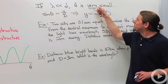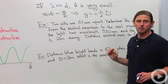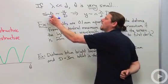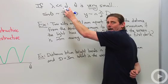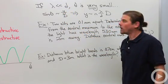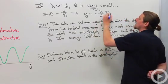then θ is going to be extremely small. And so then we can use this wonderful approximation and say that the sine of θ is approximately y divided by the distance to the screen, capital D.